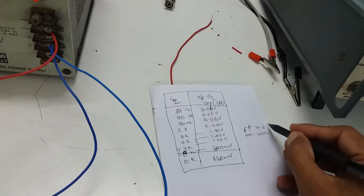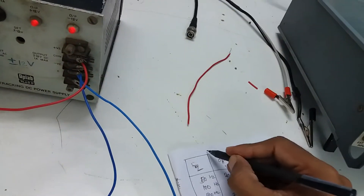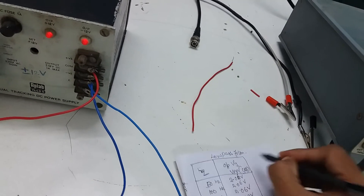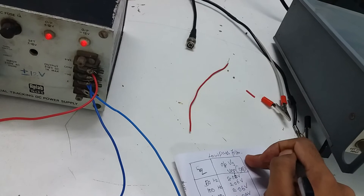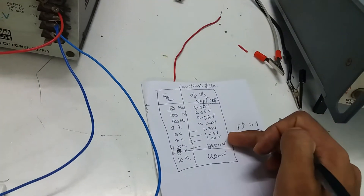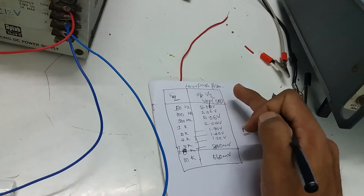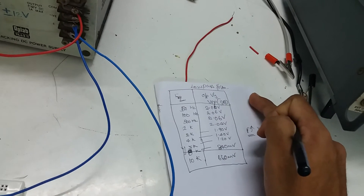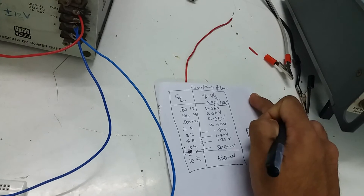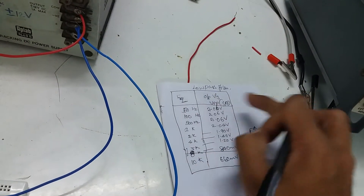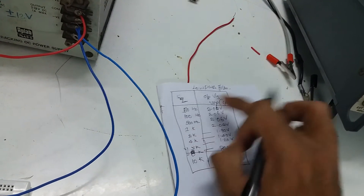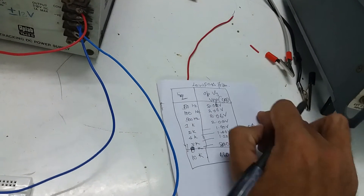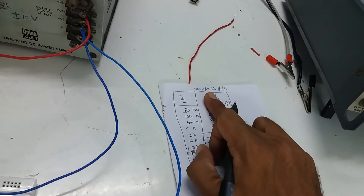When frequency increases, output voltage decreases — this is the low pass filter. Next, you will find the gain (output / input) and the gain in dB. Then you will plot gain in dB versus frequency on a Bode plot. That completes the low pass filter experiment.